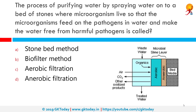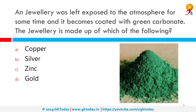The process of purifying water by spraying water onto a bed of stones where microorganisms live, so that the microorganisms feed on the pathogens in water and make the water free from harmful pathogens, is called the biofilter method. A successful biofilter is much more than a machine — for example, aquarium biofilters work by letting organisms break down waste just like in nature. A biological filtration system provides several phases for microorganisms to grow and can include plants and small invertebrate animals.